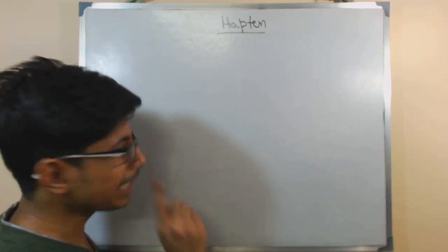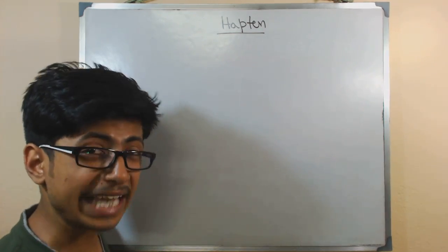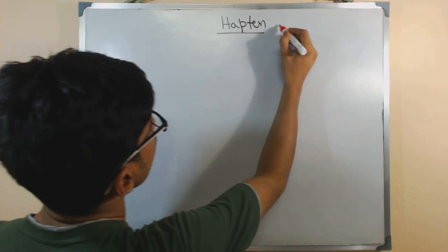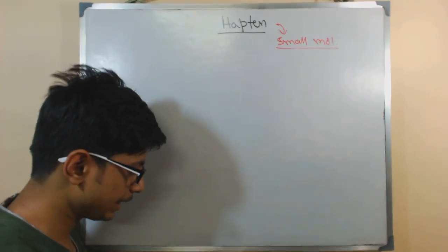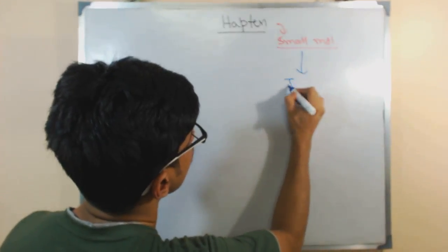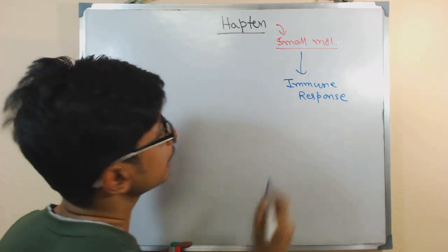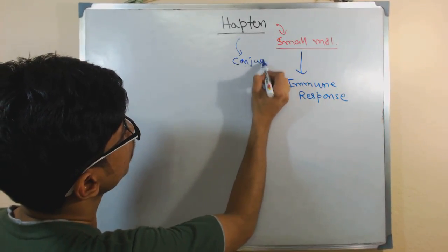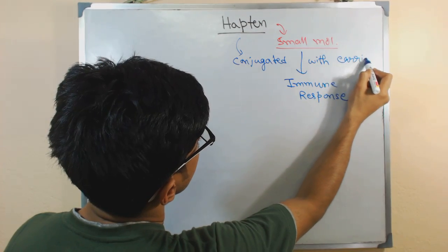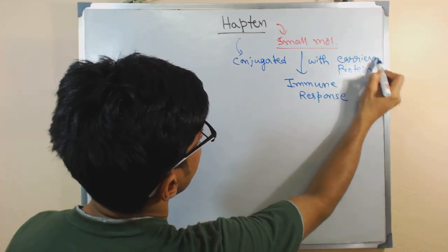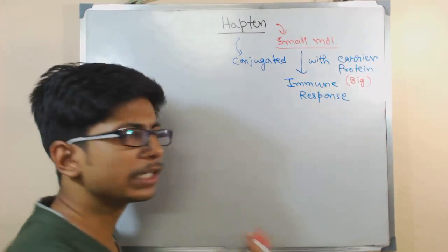That means antigen, if it is present in your body, it will trigger an immune response no matter what condition it is, no matter what molecule or weight it has. But hapten is a very small molecule and this small molecule can only show immune response if it is conjugated with the carrier protein. The carrier protein is large, it is bigger. There can be different types of carrier protein.